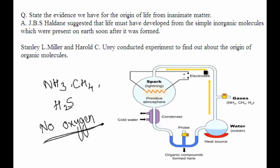This was maintained at a temperature just below 100 degrees centigrade, and sparks were passed through the mixture of gases to simulate lightning. At the end of a week, 15% of the carbon from methane had been converted to simple compounds of carbon including amino acids.